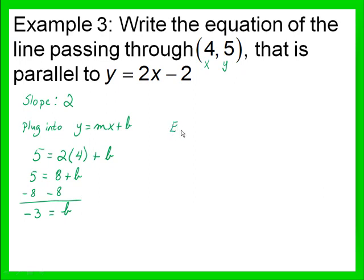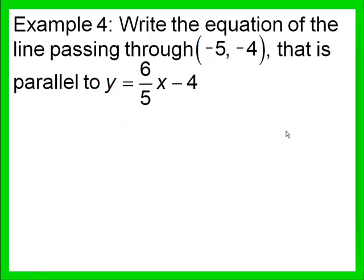Now we can write the equation for our line: y equals our slope 2x plus our y-intercept negative 3. Example 4: write the equation of a line passing through the point negative 5, negative 4 that is parallel to the equation y equals 6 over 5x minus 4. Again, our equation is in slope-intercept form, so we can read off of this equation the slope of the line that we need, which is 6 over 5.